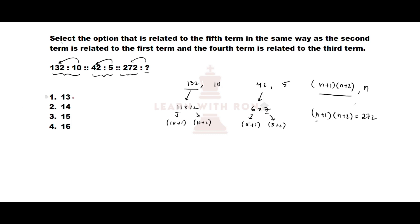If n=13: (14)(15) — unit digit of 4×5 is 0, but we need unit digit 2, so not our option. If n=14: (15)(16) — unit digit of 5×6 is 0, not our option either.